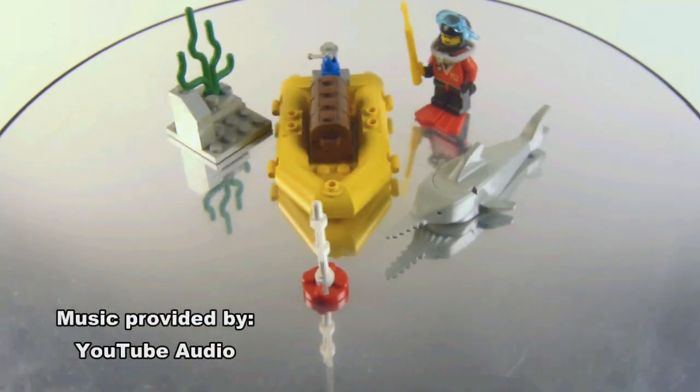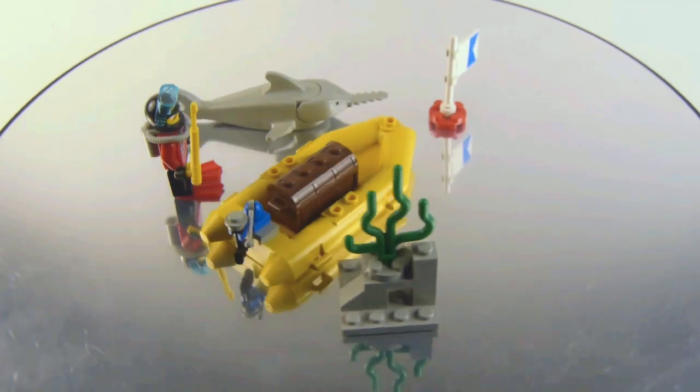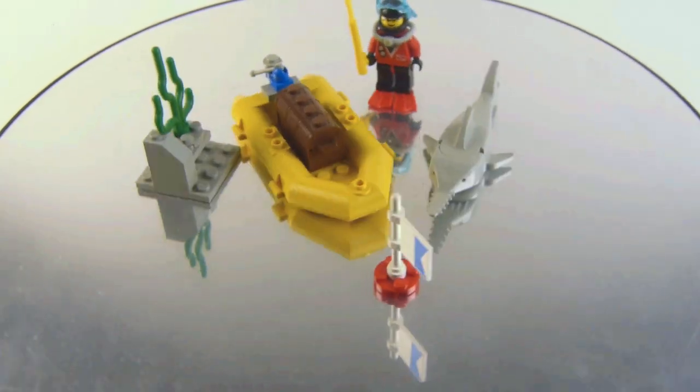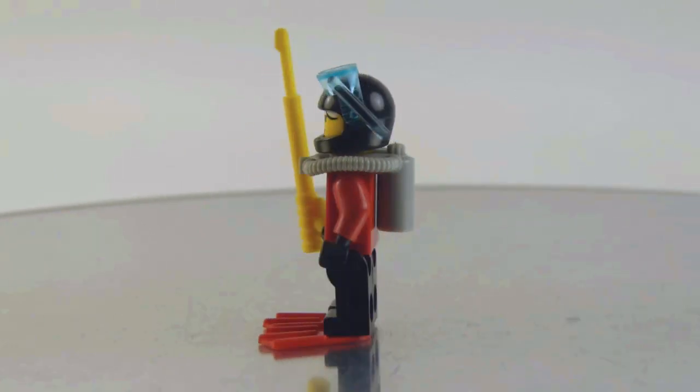Welcome back to this cookie shop for a vintage LEGO Town set review. This is set number 6555 with one minifigure from 1997 with 30 pieces and it's called Sea Hunter. Here is the figure, the diver we get with the set.